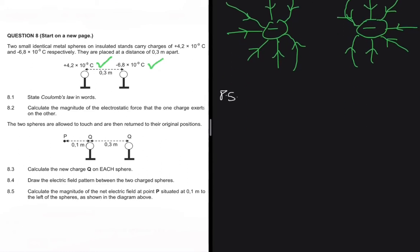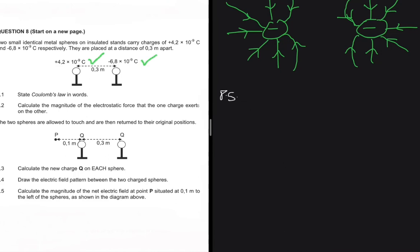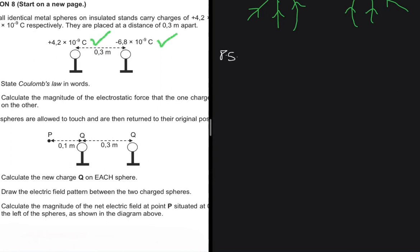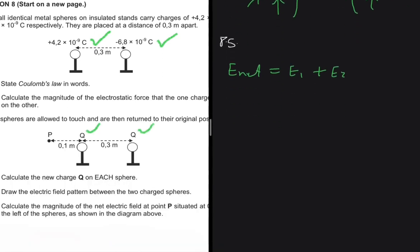For 8.5, we calculate the magnitude of the net electric field at point P, situated 0.1 metres to the left of the spheres as shown in the diagram. The net electric field E_net equals E1 plus E2, where E1 is due to the first sphere and E2 is due to the second sphere.